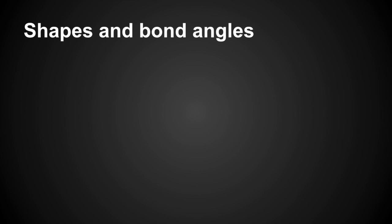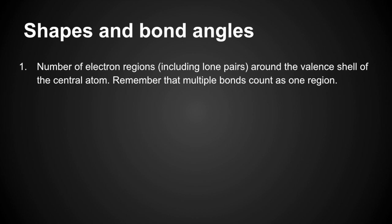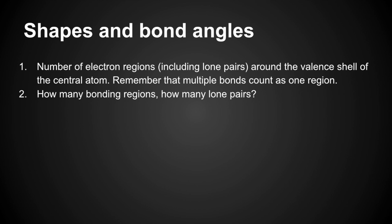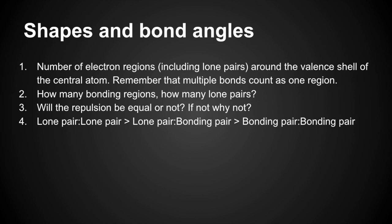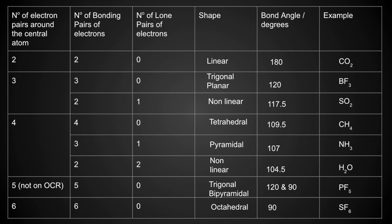Moving on to shapes and bond angles. First, count the number of electron regions — use that term rather than electron pairs, in case there are double bonds — including lone pairs around the valence shell of the central atom. Remember multiple bonds count as one region. State how many bonding regions and lone pairs there are, then say whether repulsion is equal or not and why. The order of repulsion: lone pair–lone pair > lone pair–bonding pair > bonding pair–bonding pair. As a rule of thumb, every lone pair reduces the bond angle by 2.5°. There's a table with shapes and angles — you may want to screenshot that.